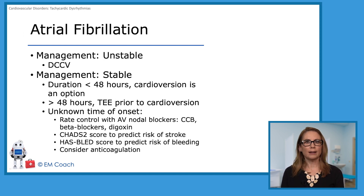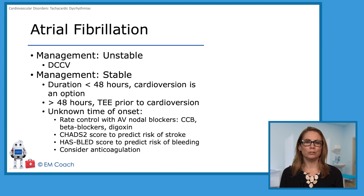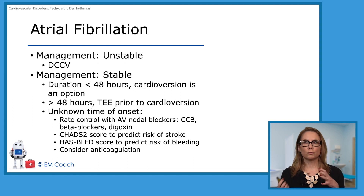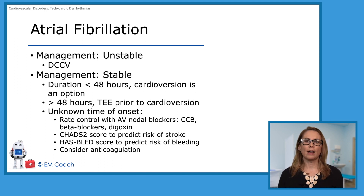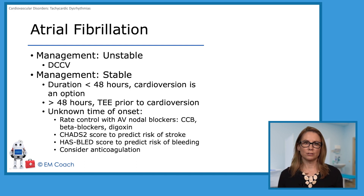AV nodal blocking agents include calcium channel blockers, beta blockers, or more old school, digoxin. You can use the CHADS score to predict stroke risk within a year, and the HAS-BLED score to predict bleeding risk with anticoagulation. There are risks and benefits to anticoagulation, and these scores help determine the best option — whether that's aspirin, a DOAC, or warfarin.